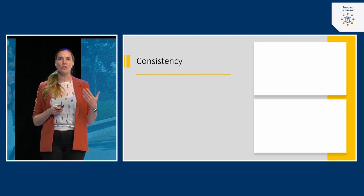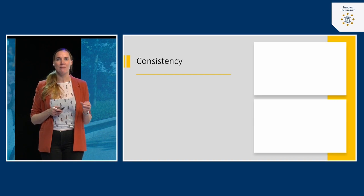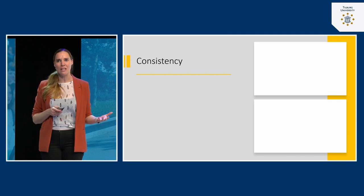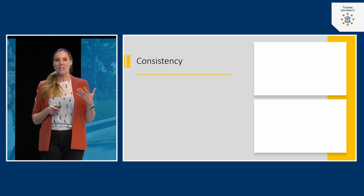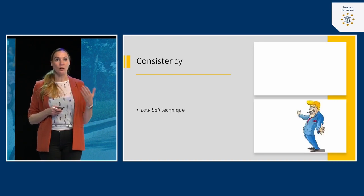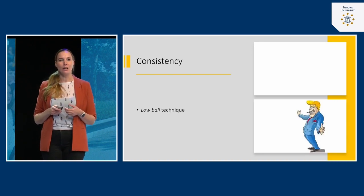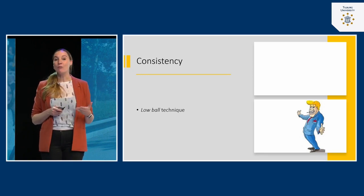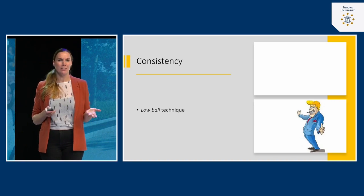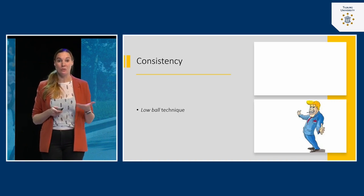Reciprocity is based on the principle of consistency, which we discussed in lecture six when we talked about cognitive dissonance theory. Once we show a certain behavior, we want to stick to it — we want to be consistent. This is also used with the low-balling technique: once you agree to do something, you continue even though the costs increase and you're being manipulated into a deal you didn't originally sign up for.